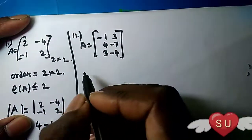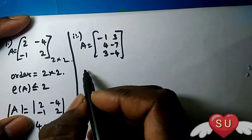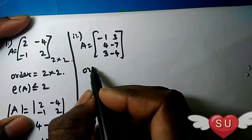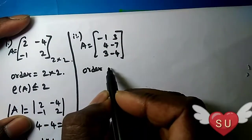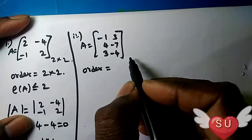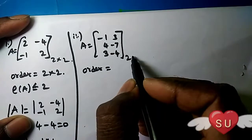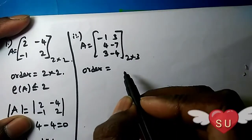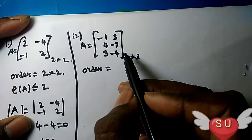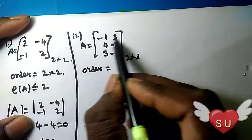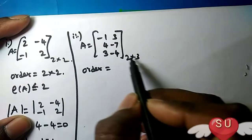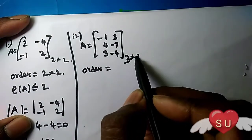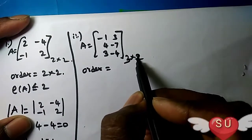In this one, it will be easy to find. Order 1 add 1 equal to 2 rows, 3 columns. First row, second row, third row — three rows, two columns.